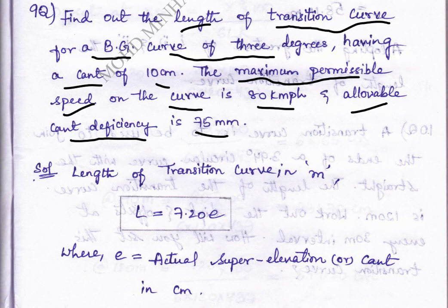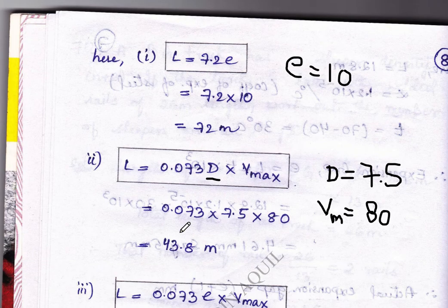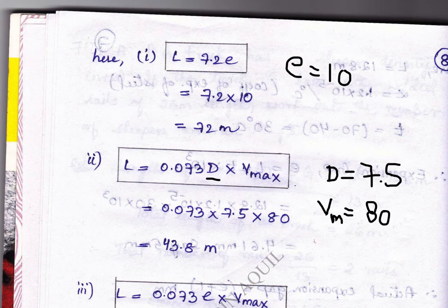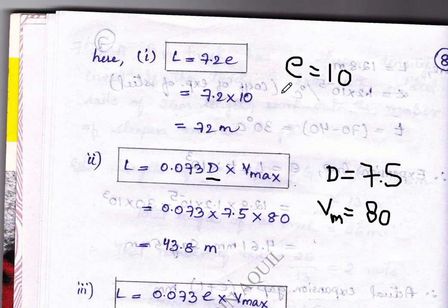The formula for calculating the length of transition curve in meters is L equal to 7.20 times e, where e is the actual super elevation or cant in centimeters. There are three different conditions to calculate the transition curve. Always remember to take all three conditions and after finding the values, we take the highest value.